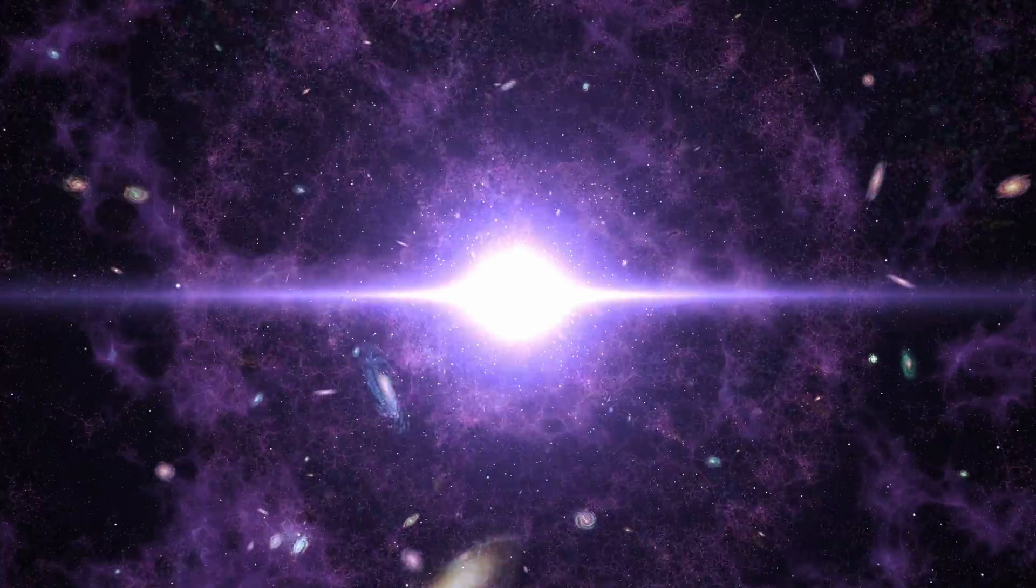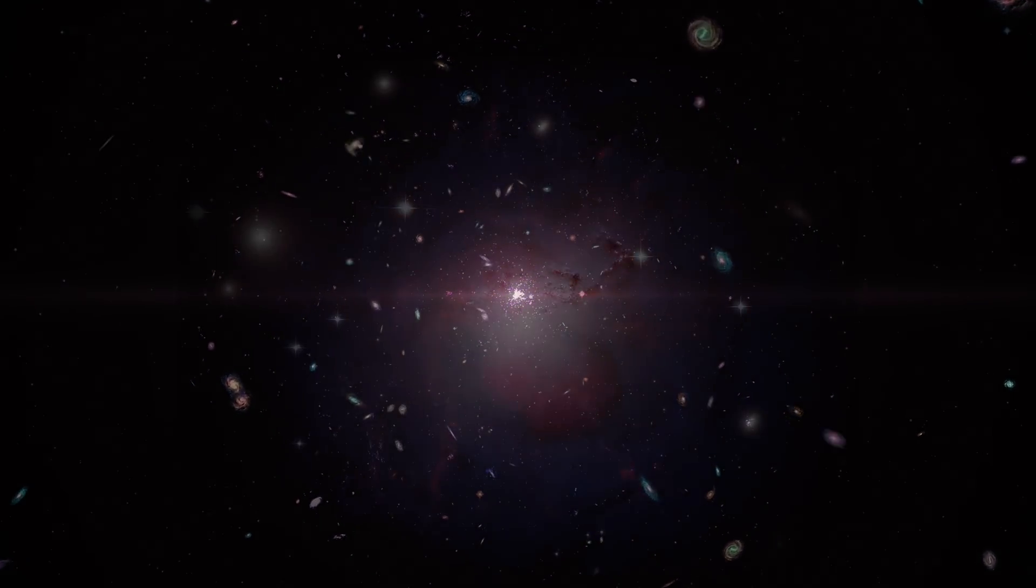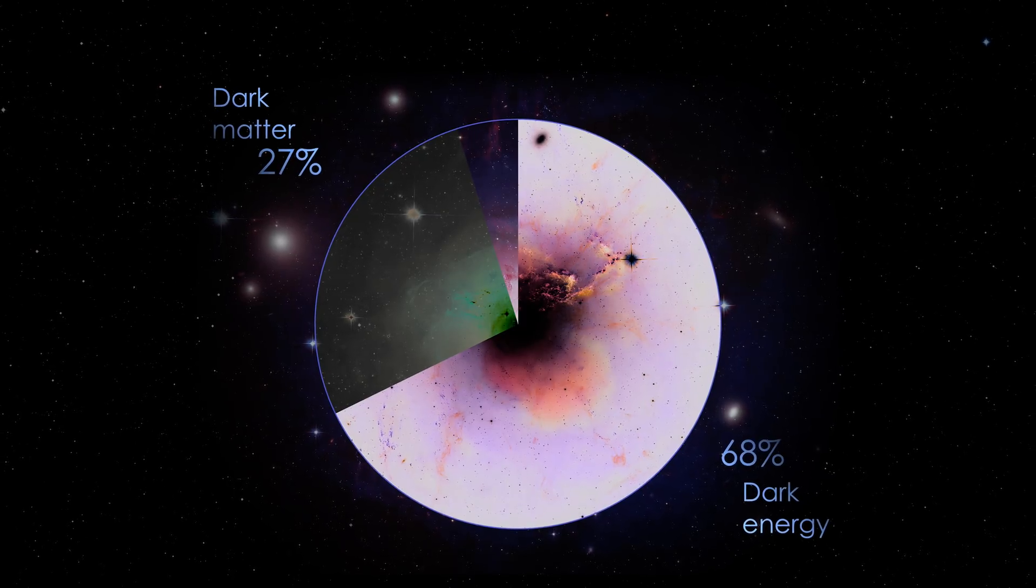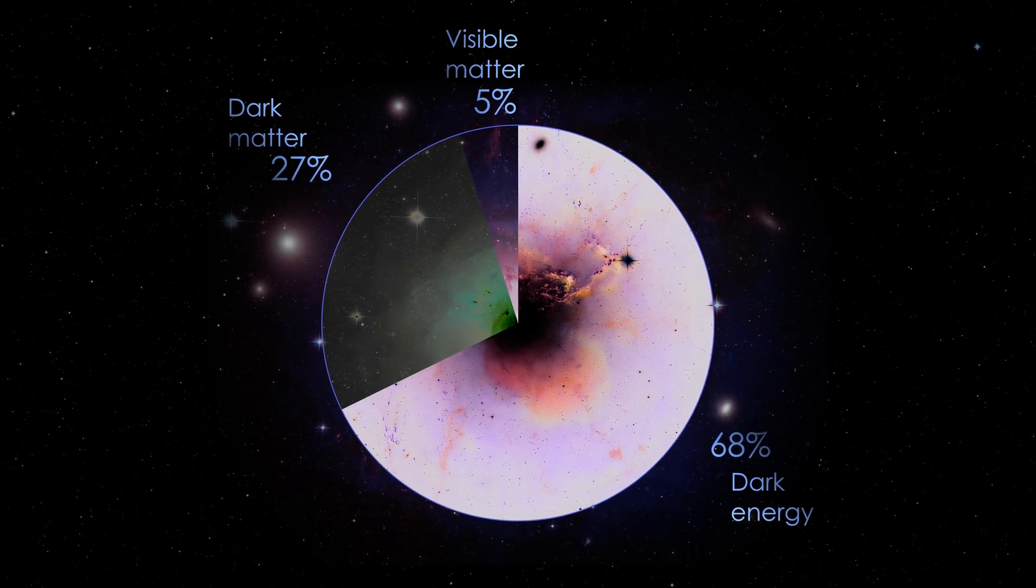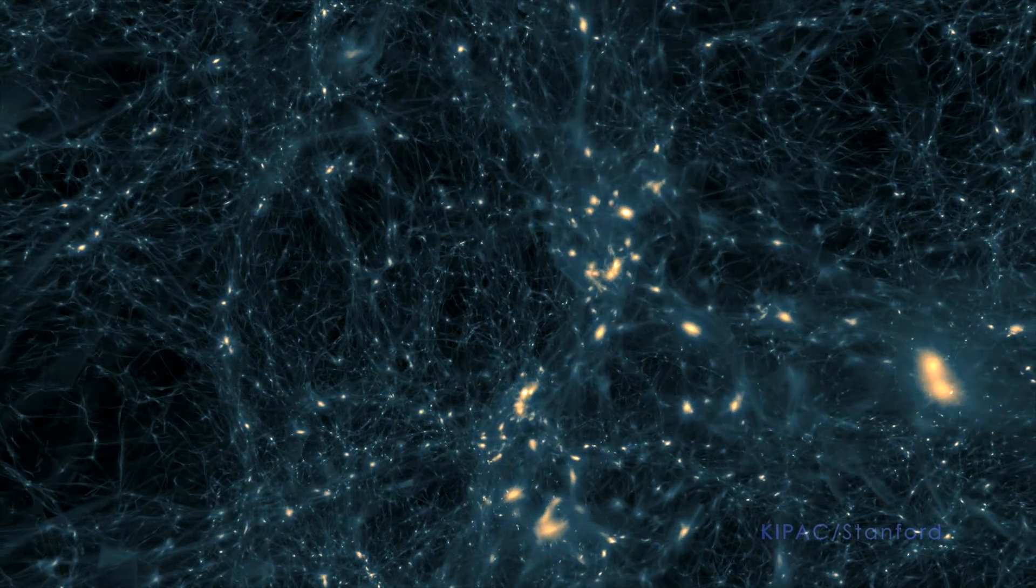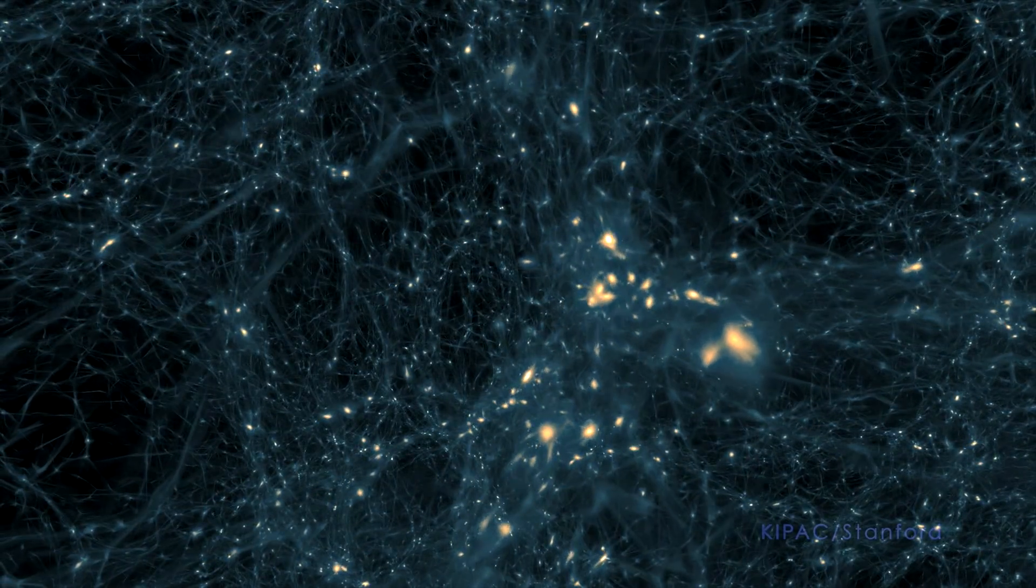The universe, for all we have learned about it, we have still only scratched the surface. Everything that we can see around us makes up less than five percent of what's actually out there. All the rest is called dark matter and dark energy. What are they? We still don't know, even though they determine the fate of the universe.